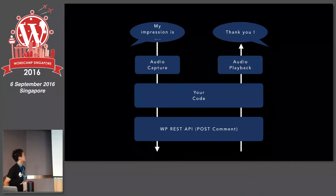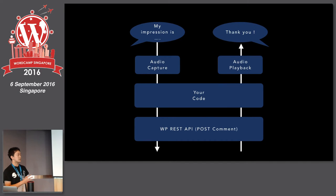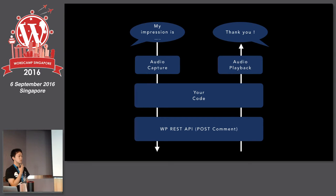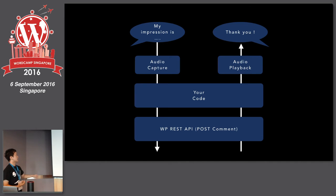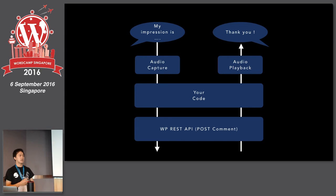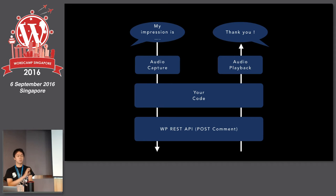AmimotoNinja uses the WP REST API. How does it work? You talk to Alexa, say 'This skill is good.' Alexa captures your voice, converts it to a string, runs some application code, converts it to a post, and posts it to the WP REST API as a comment.